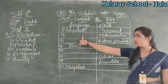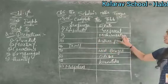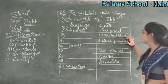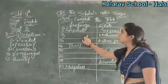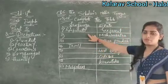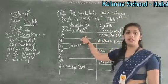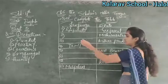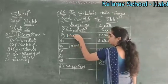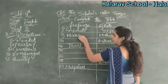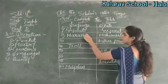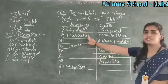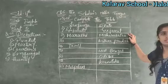Now see the second number — it is given Maharashtra. The people who live in Maharashtra use Marathi language. The spelling of Marathi is M-A-R-A-T-H-I. So Marathi language is spoken in Maharashtra state.